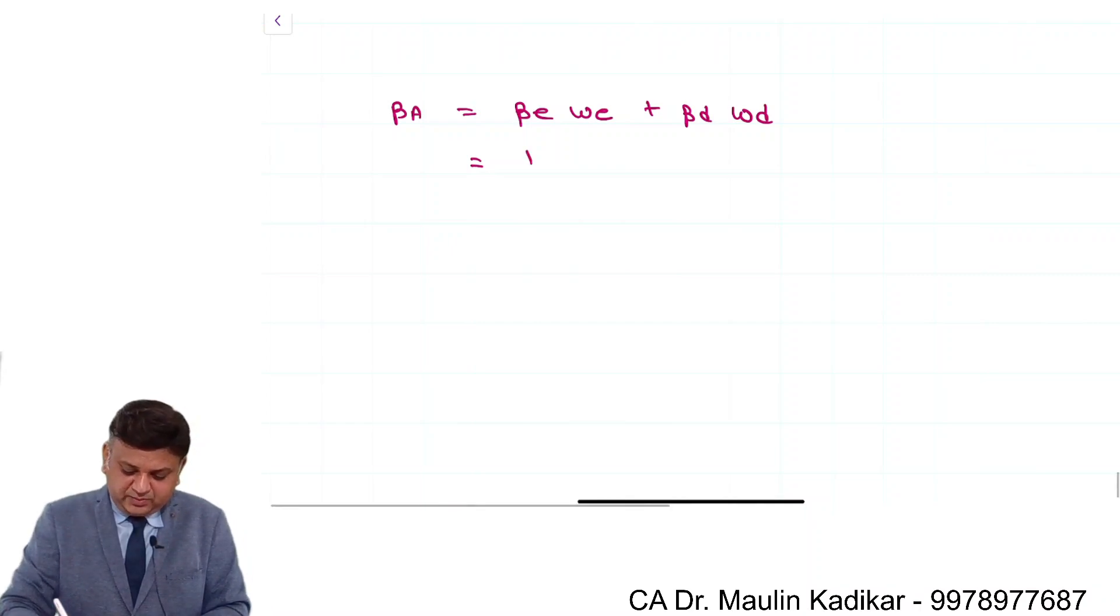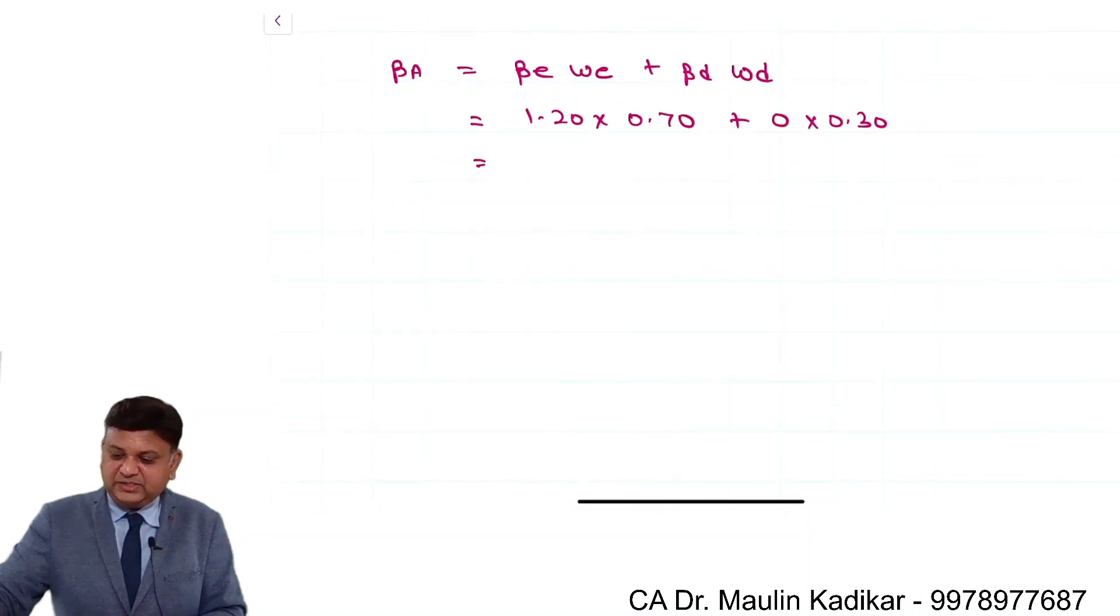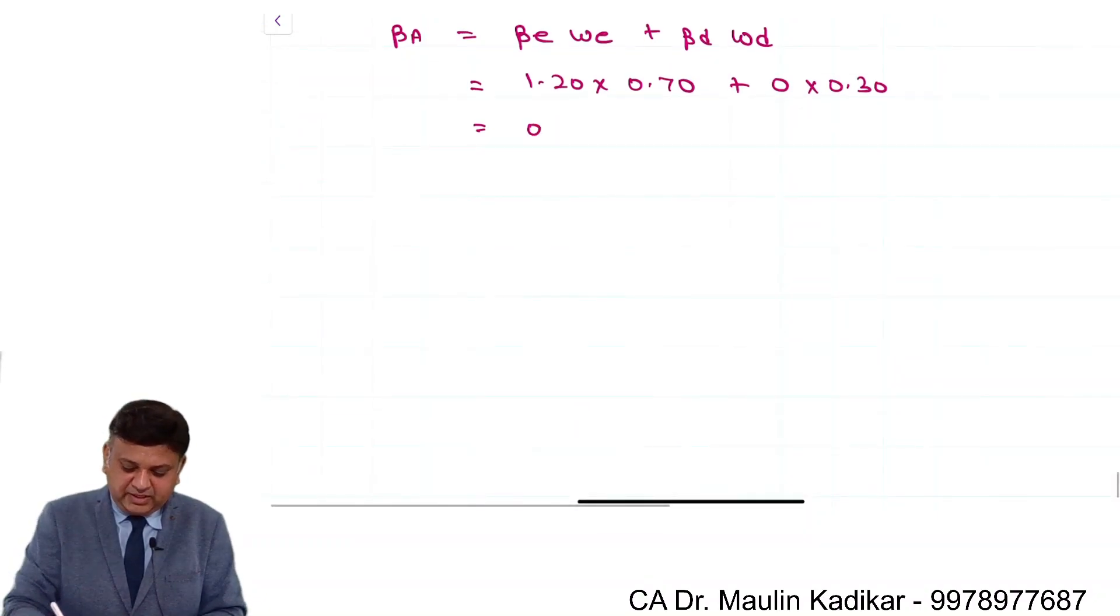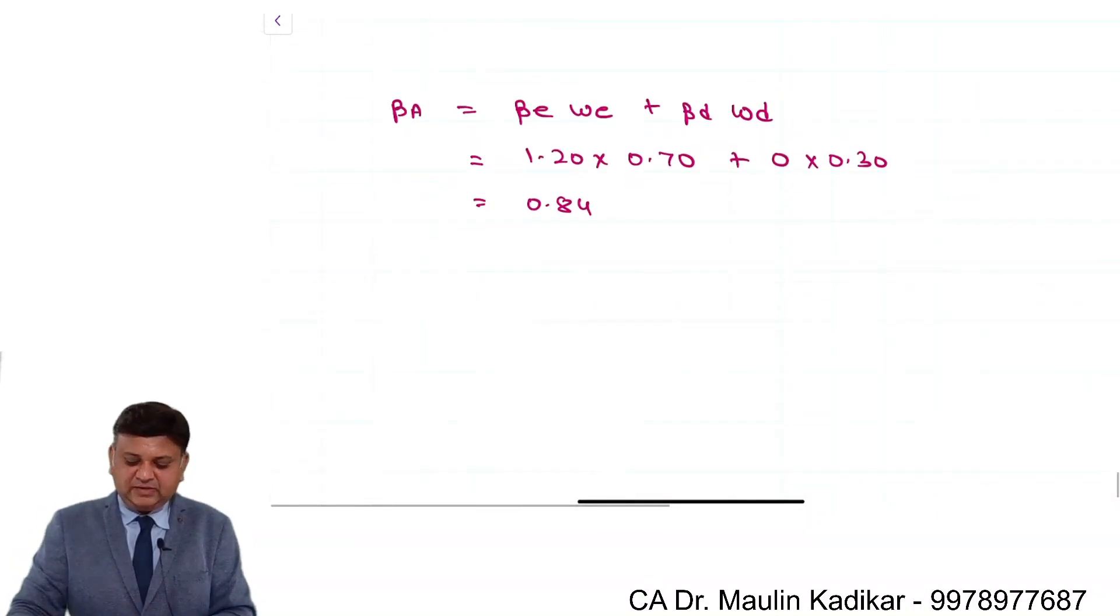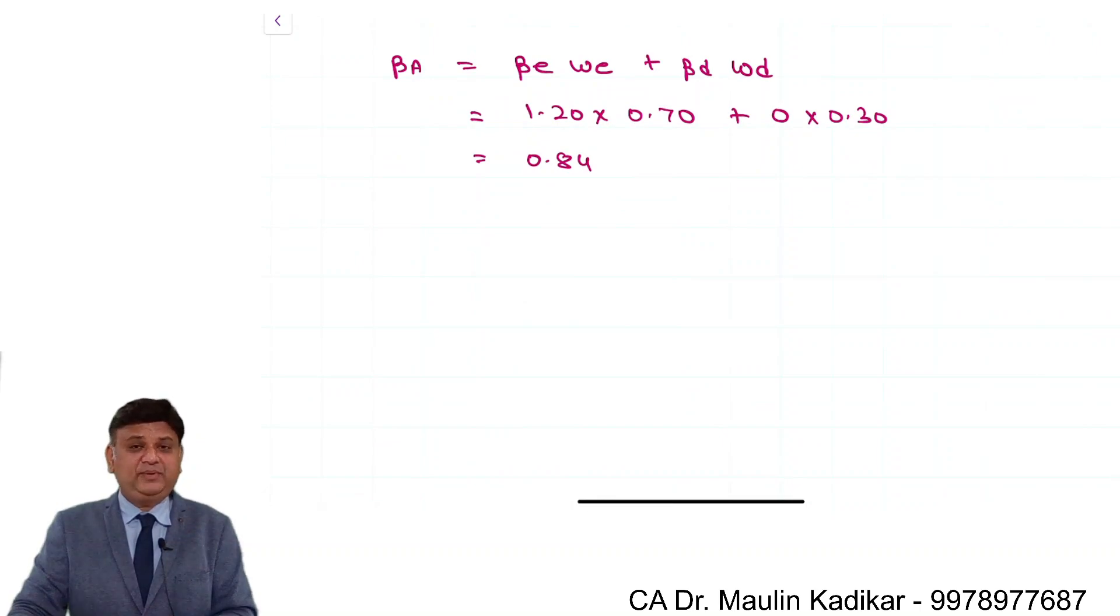Equity beta is provided as 1.20 and we are going to have 70% equity. Beta of debt is given as 0. Beta of debt financing is 0.30. So 1.2 into 0.7, that comes to 0.84. This is the way the beta of the asset or project beta can be calculated.